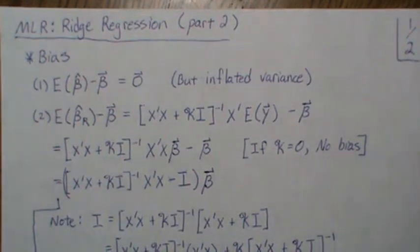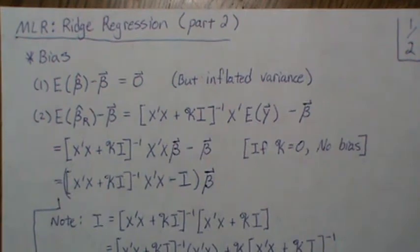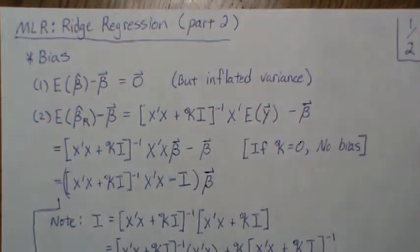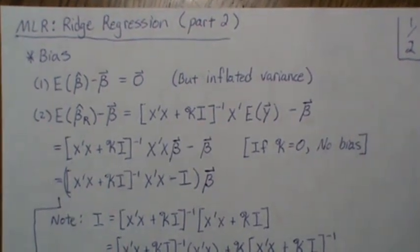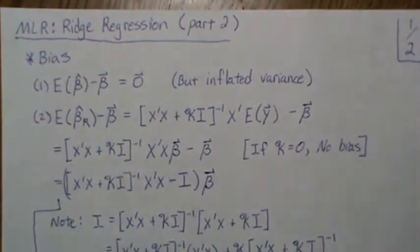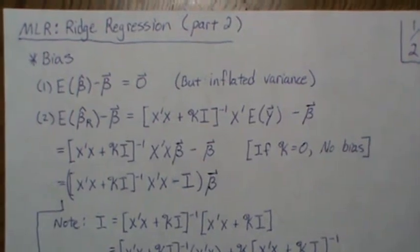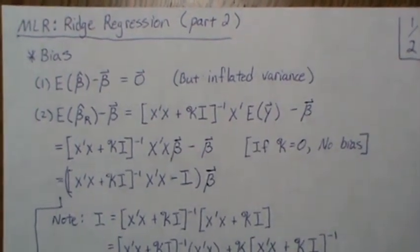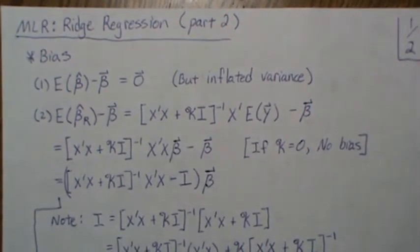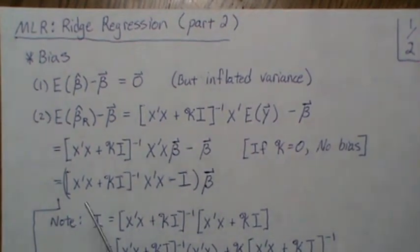In this video we're in the multiple linear regression setting and we're going to look at Ridge Regression. This is part two, so if you missed part one I'd recommend going back and looking at it. There we developed some of the notation and we looked at how Ridge Regression reduces the overall variance in our estimates, but at the cost of being slightly biased. So part two is looking at bias in the Ridge Estimators.